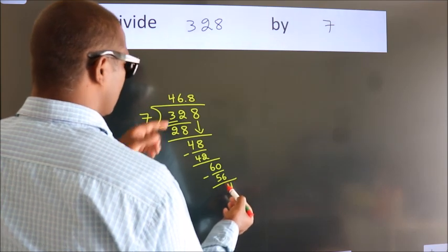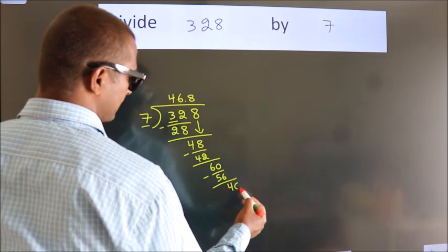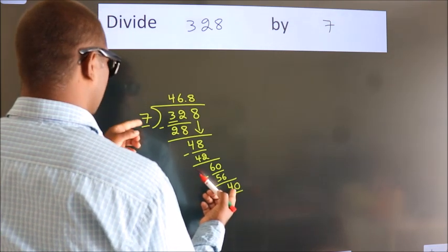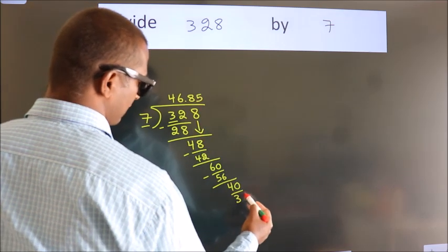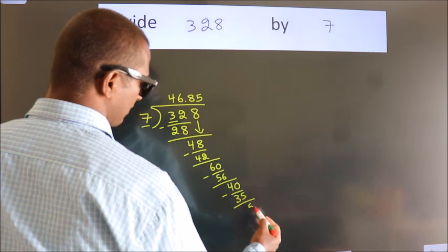After this, we already have the decimal, so directly take 0. So 40. A number close to 40 in the 7 table is 7 fives, 35. Now we subtract. We get 5.